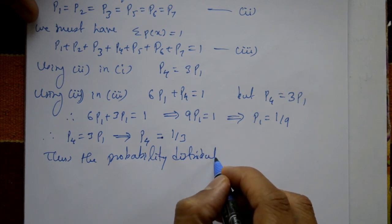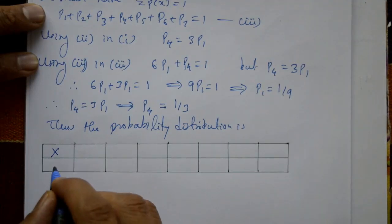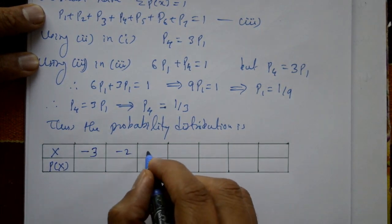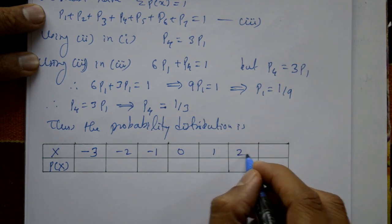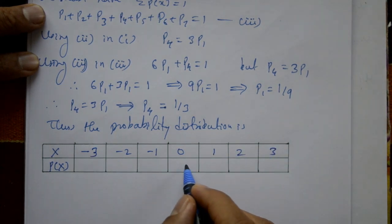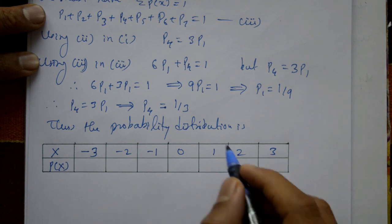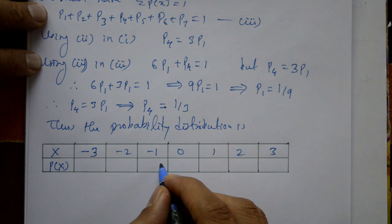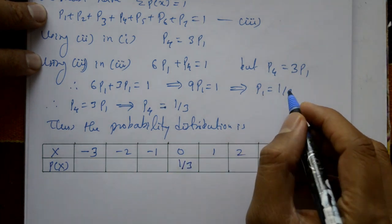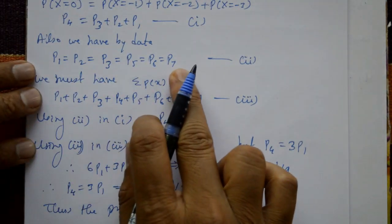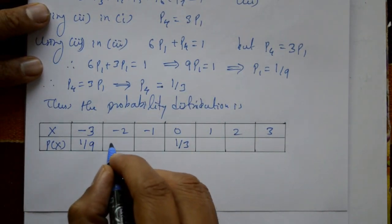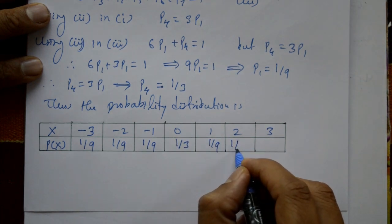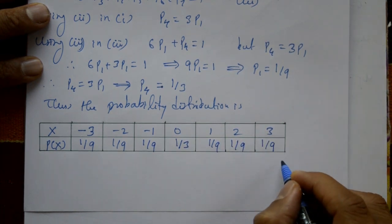Thus the probability distribution is: X takes values minus 3, minus 2, minus 1, 0, 1, 2, 3 with corresponding probabilities p(x) equal to 1/9, 1/9, 1/9, 1/3, 1/9, 1/9, 1/9 respectively. This is the required solution.